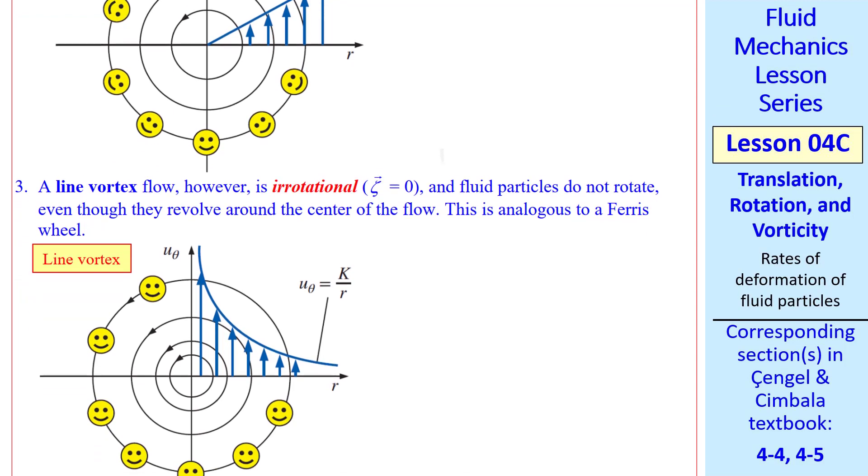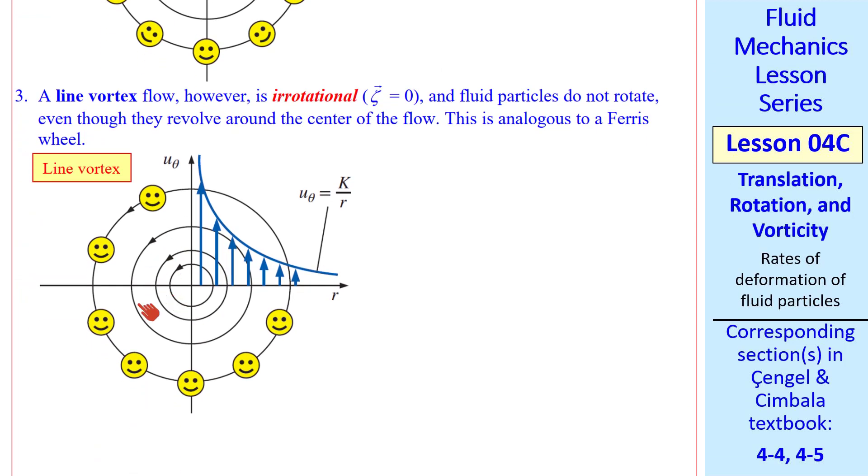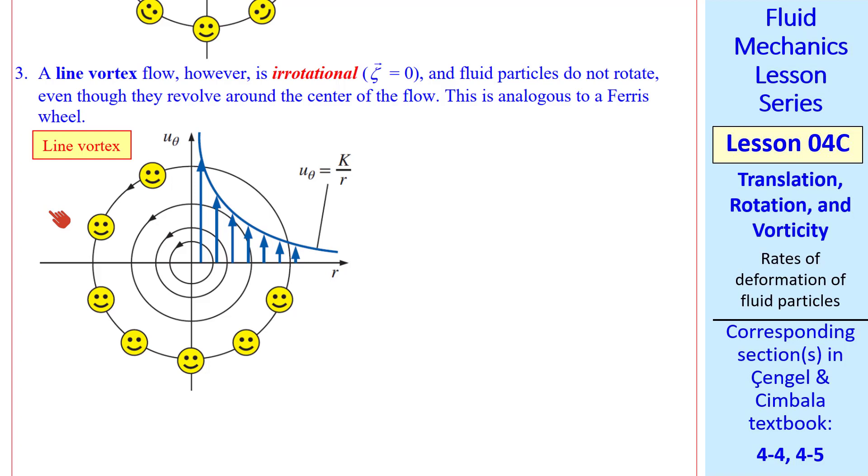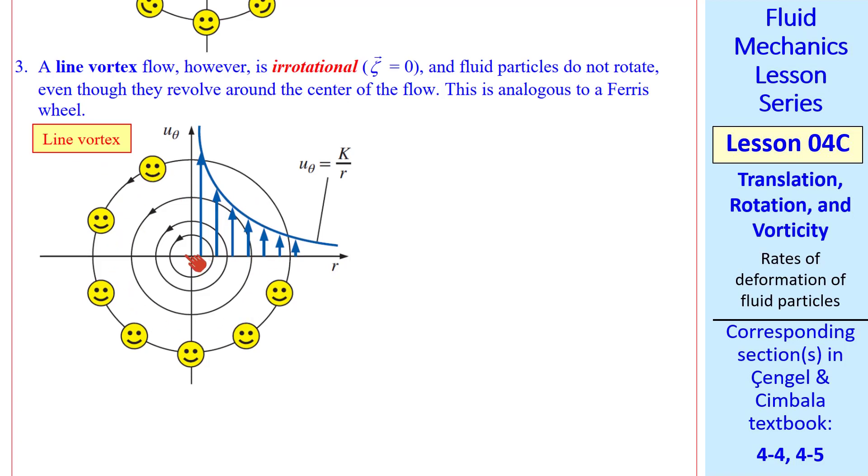A line vortex, which is similar to a tornado, also has circular streamlines. But the velocity field is very different than solid body rotation. Instead of increasing with radius, u theta decreases with radius, like some constant over r for a line vortex. We say line vortex because this is two-dimensional in this plane, and nothing changes out of the plane or into the page. As the fluid elements revolve in their circular path, they do not change their orientation. In other words, they don't spin. So this flow is irrotational.